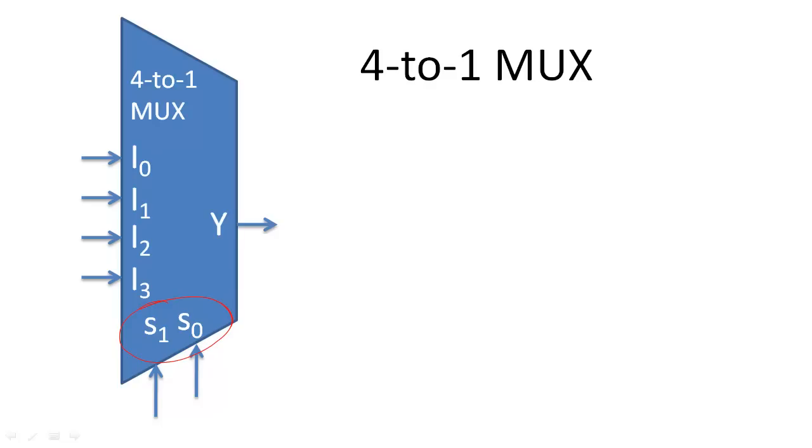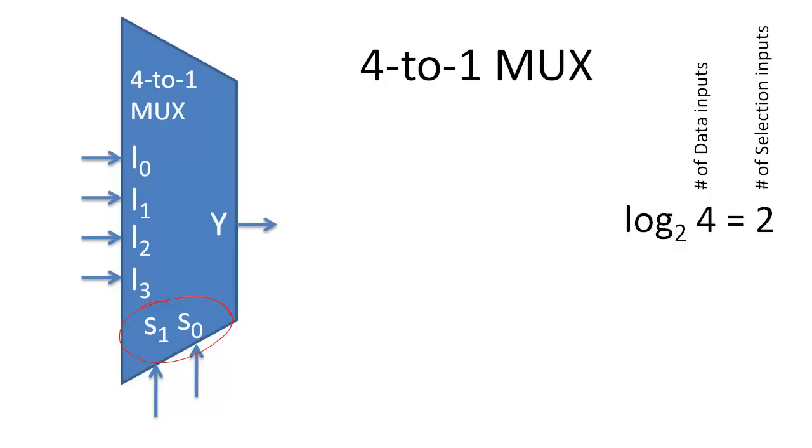For example, for a 4 to 1 multiplexer, we need two selection inputs to encode all of the indices of the data inputs. We then use the binary number encoded by the selection inputs to indicate which data input is transmitted by the output.